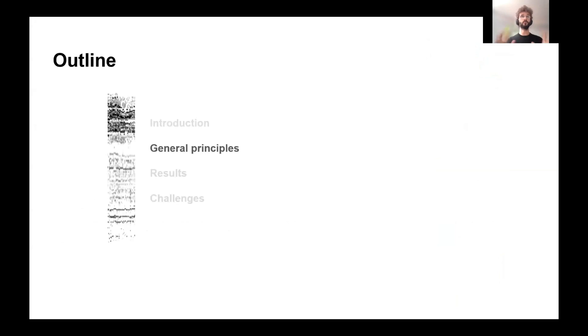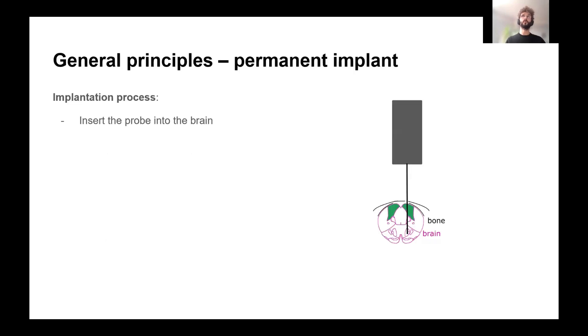Okay, so now I'm going to talk about the general principles of these implantations. I'm going to start with the permanent implant, which is pretty simple. Again, I've given more details on this in previous talks, and also Dario Campagner and so on have talked more about the surgery part. So basically, you insert the probe in the brain, which is represented here. This is the probe. The shank here is inserted in the brain.